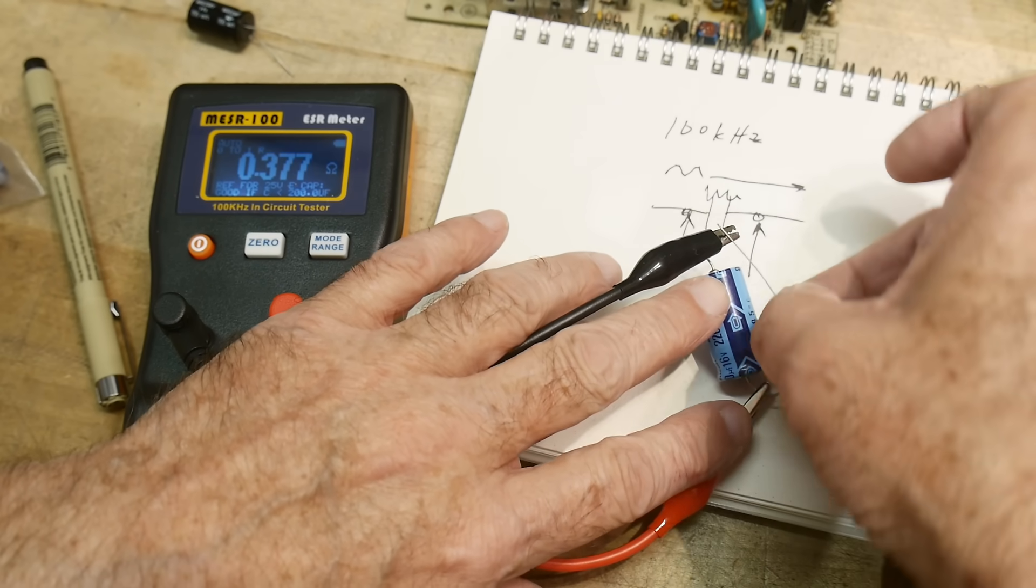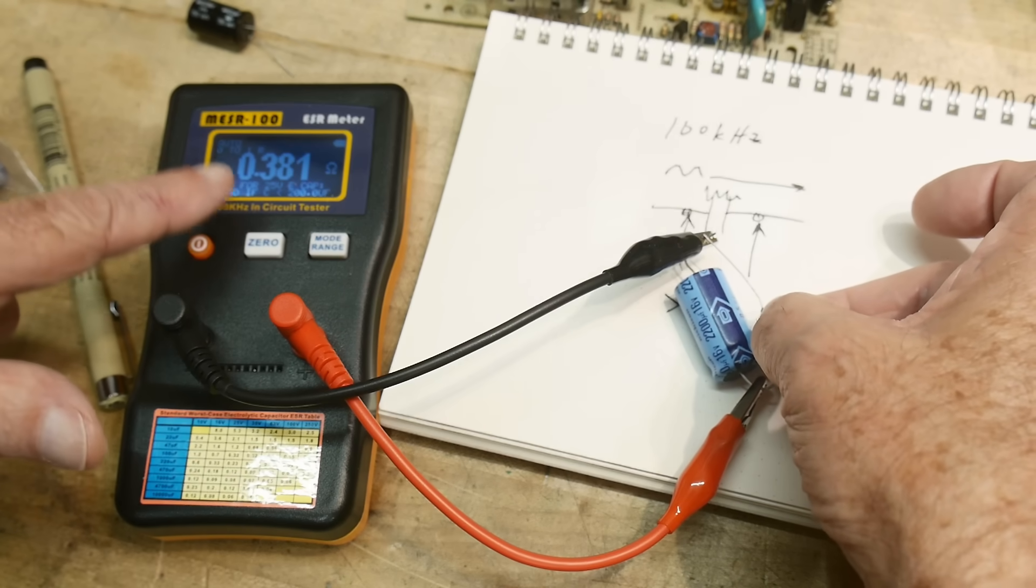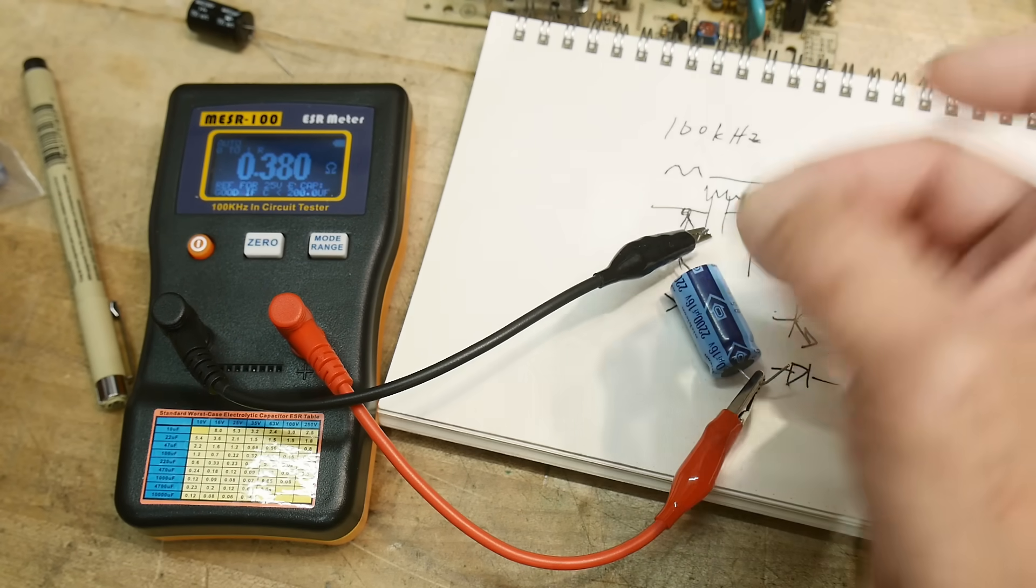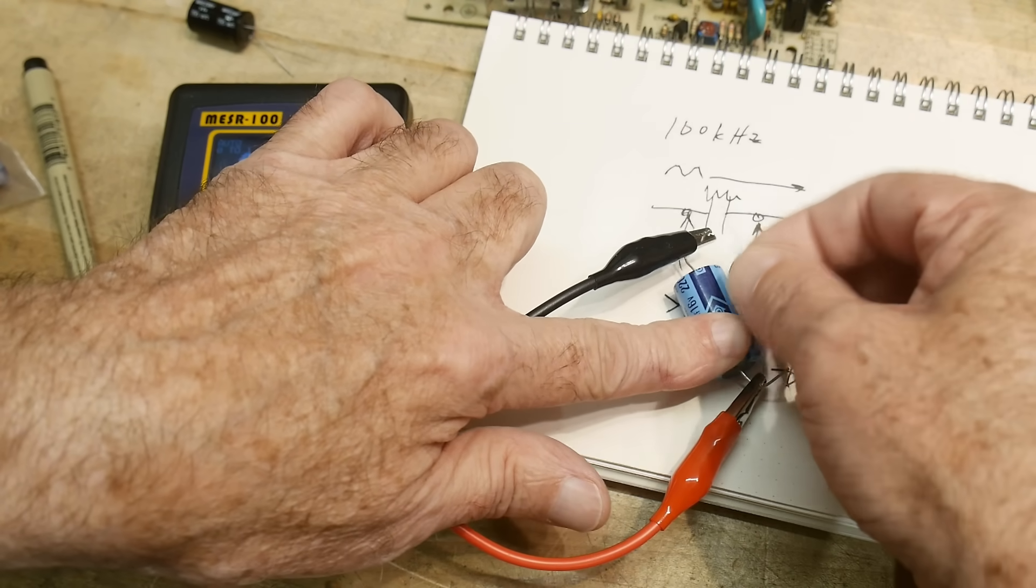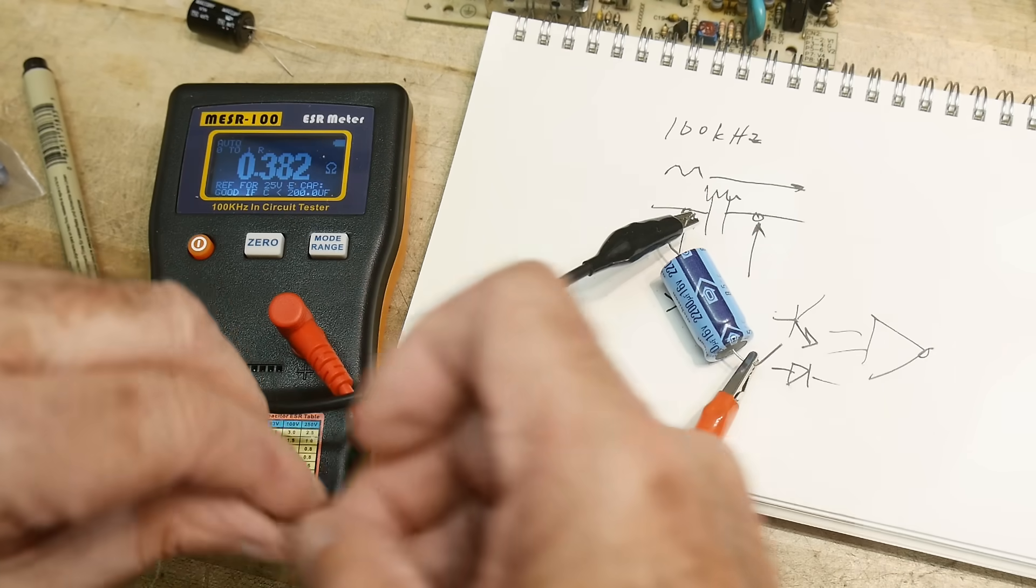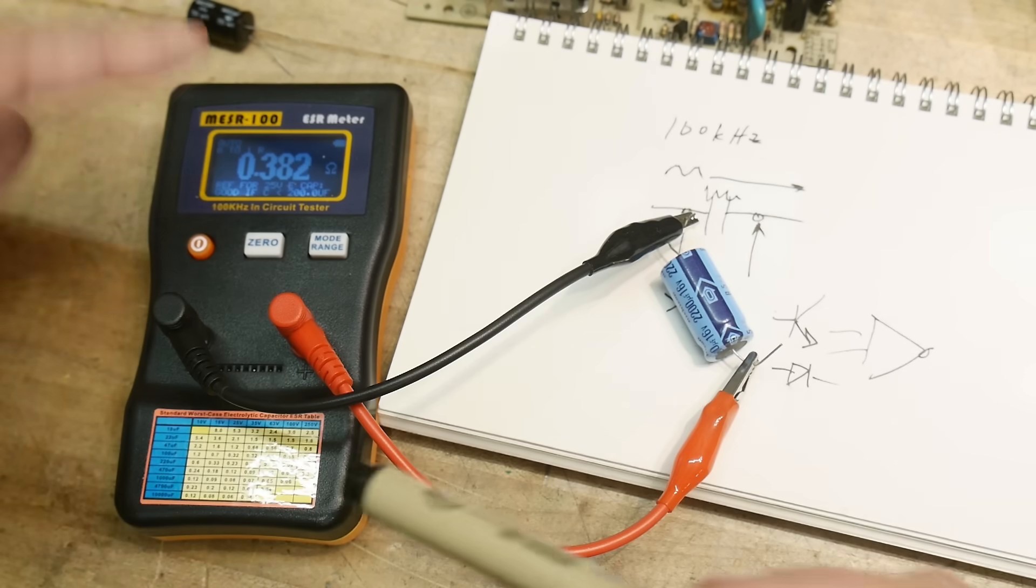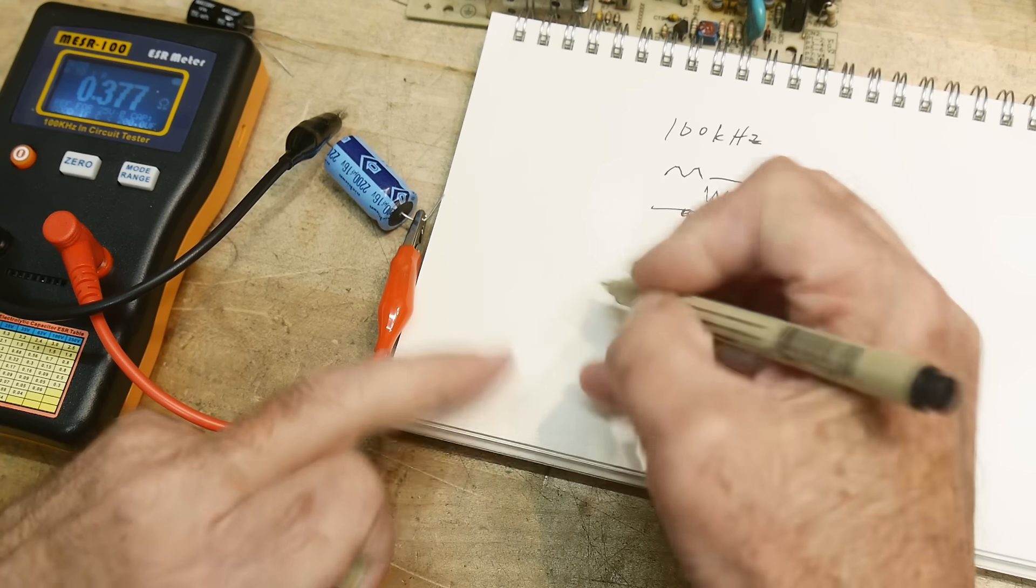You can see that it doesn't change the value over here. Make sure I don't use the resistance of my fingers here. But you can see that it didn't change the value at all, even though I had a diode across it. And I can put it in either way, it's not going to affect it. In fact, you can put in two diodes back to back, it won't affect the reading. Why is that?